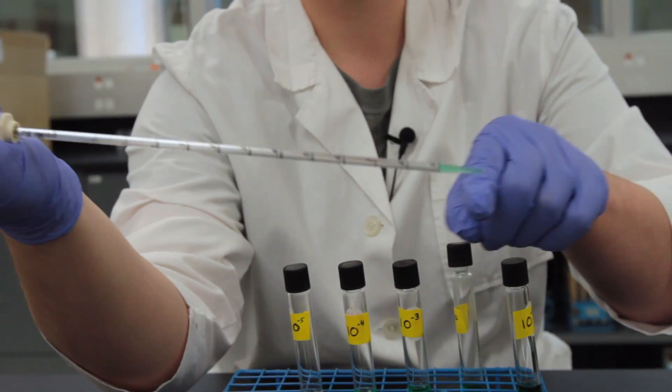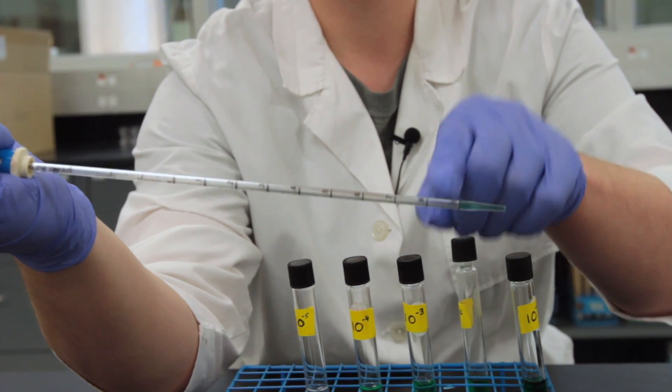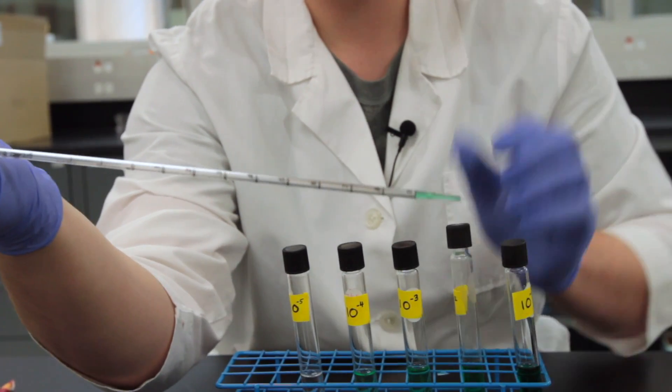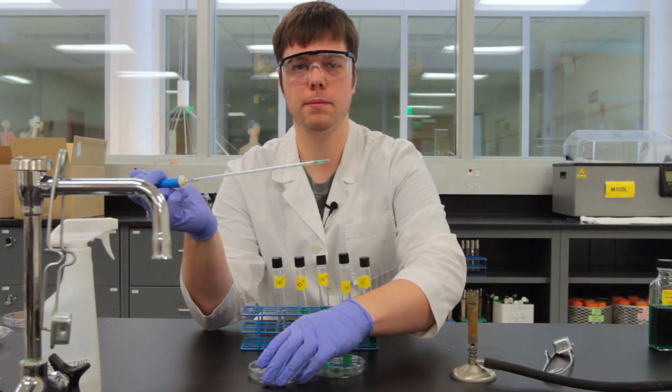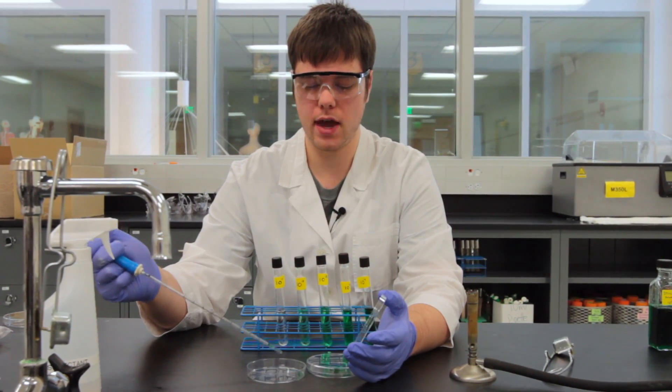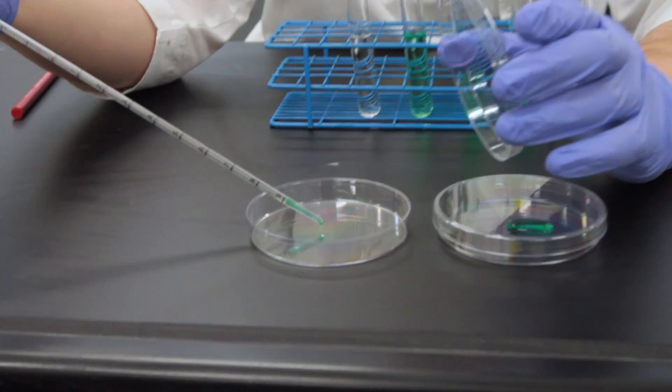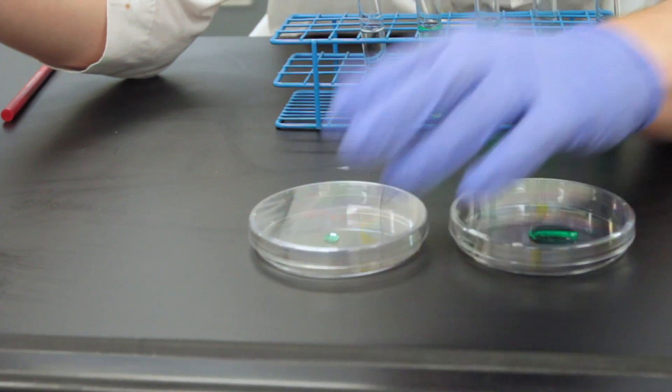One mil, we're all the way up to the zero line. 0.1 mil, we're right at the tip. We'll very carefully put that cap back on, open up our 10 to the negative 3 plate, and dispense that 0.1 mil into the bottom of the plate, and then covering to make sure nothing falls in.